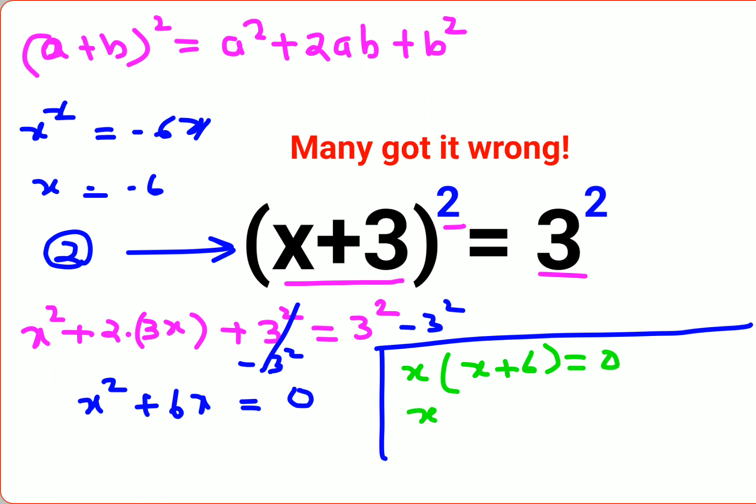So from this I can say x = 0 or x + 6 = 0. So here we can say x = -6.